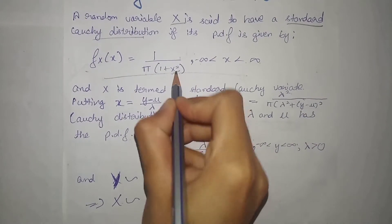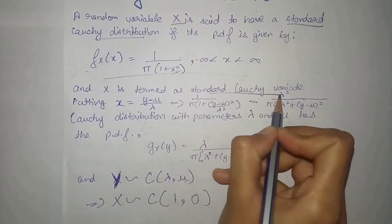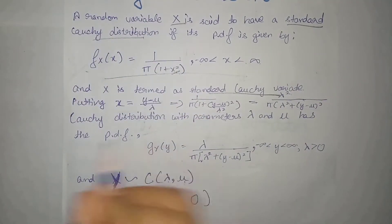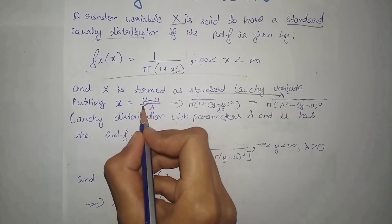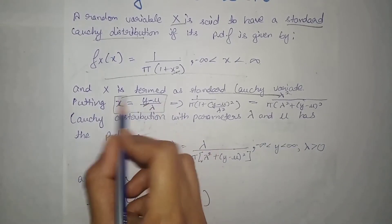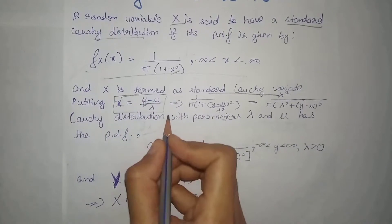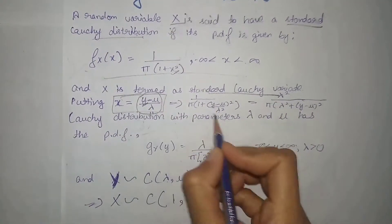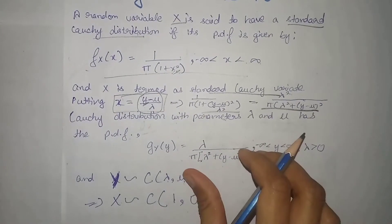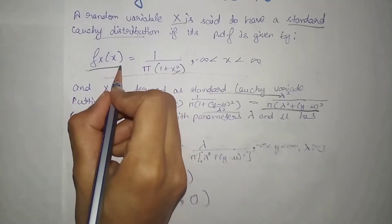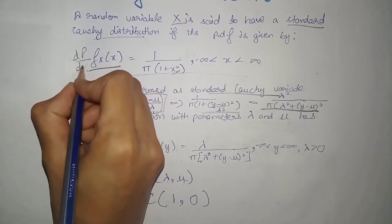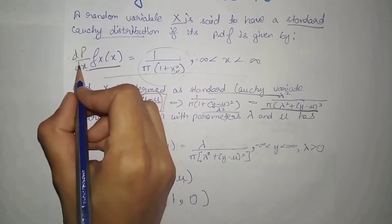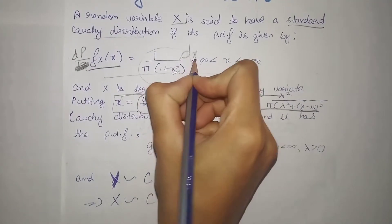This is our standard Cauchy variate. Now we have a PDF that is y, and in x and y we have a relation present. We will put this value in x. This is your PDF; we can write dp by dx equal to this, and we can also say that dp is equal to this multiplied by dx.